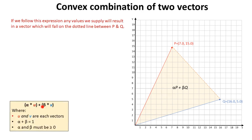If we follow this expression, then any values that we give it will result in a vector which has to fall somewhere on this dotted line from P to Q. And we should be able to prove this by supplying any values we like for alpha and beta. You can try this yourself, but let's work through an example now.